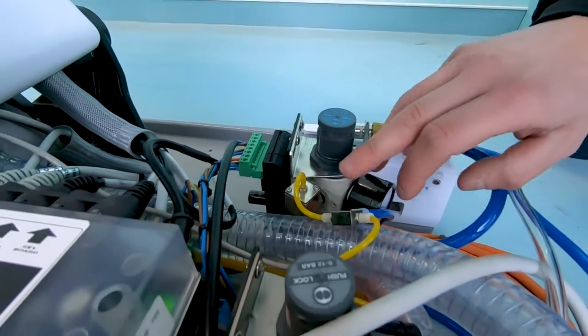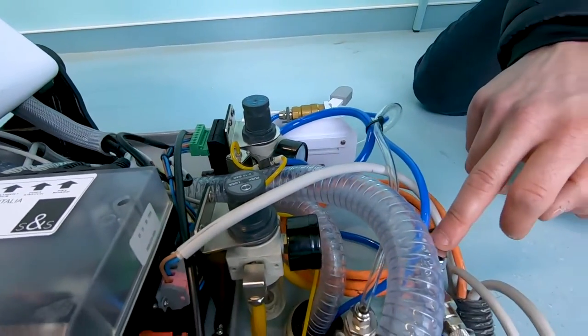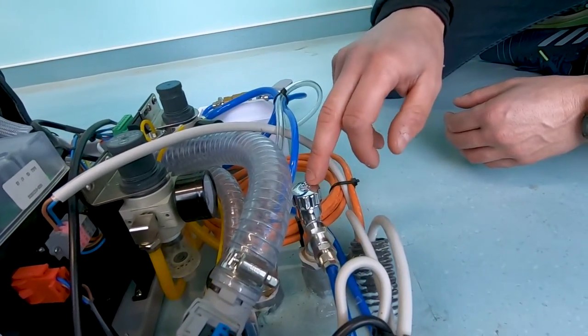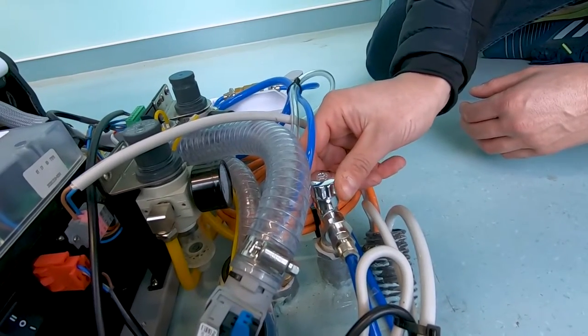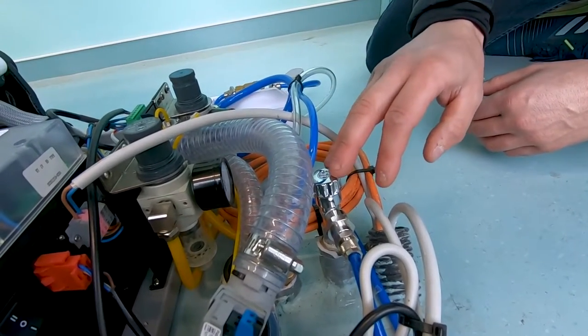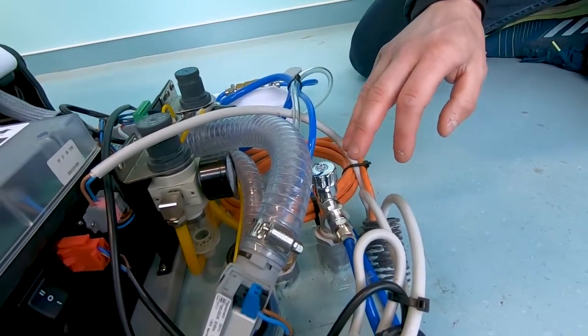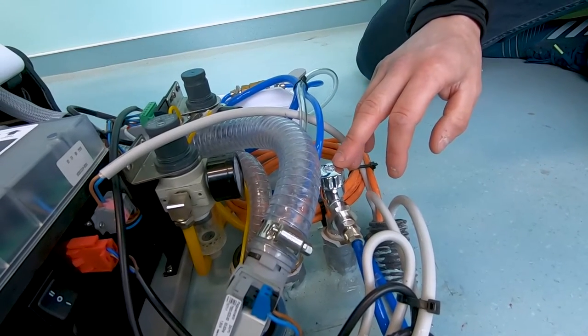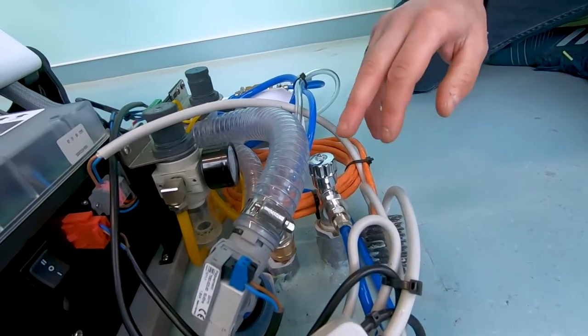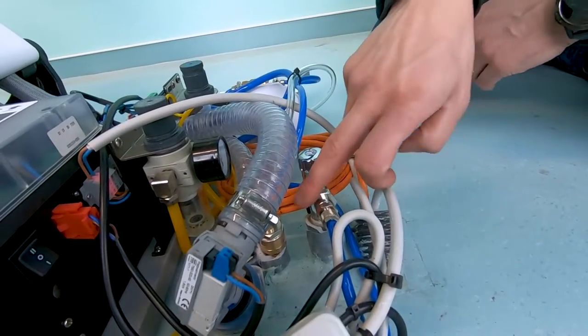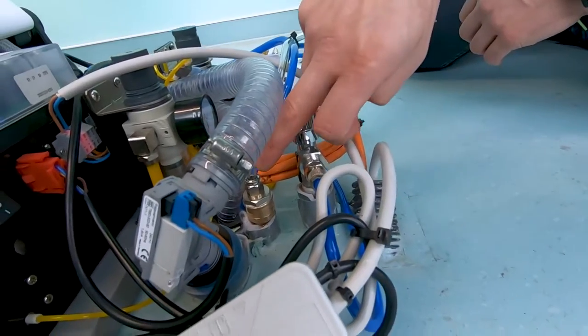We normally apply also an extra tap on the chair base for the water. In case you have a problem, you can close only the water here. This is very important to not have only the central system to close, but chair by chair. For the air it's not so important, but you can apply also this kind of tap.